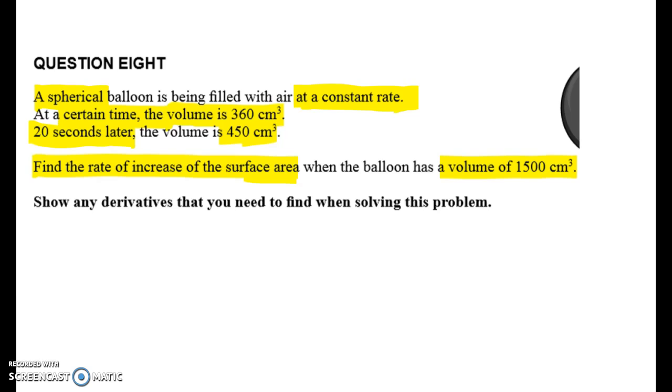So this question I reckon is easier than all of the optimizations with similar triangles but that could just be me. What we've got to do first is to say well what's dV by dt? Well dV by dt is 90 cubic centimeters per 20 seconds